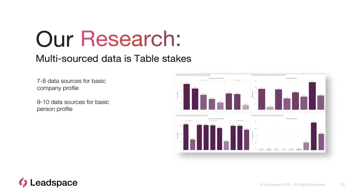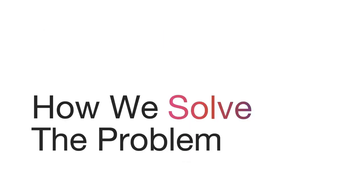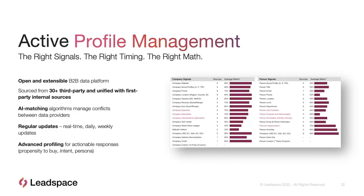What we do that's different: we talked about the open platform, but we also multi-source all our data. We're already buying the data and bringing it in so that it's fresh and stays up to date. In summary, the way we solve this is active profile management. That is this open graph — taking advantage of about three dozen different data sources that we unify for you. We can also bring in other data sources as needed, giving us the most accuracy and capability to match accounts and people and map them to your system's needs.